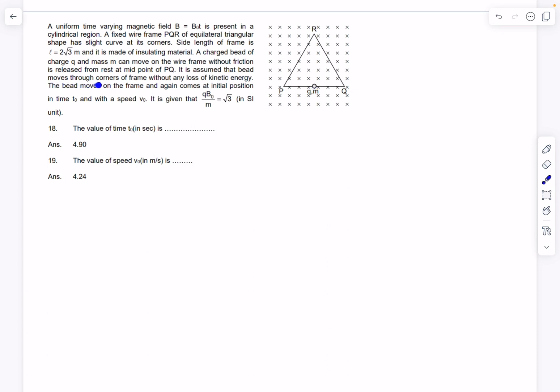It is assumed that the bead moves through corners of the frame without any loss of kinetic energy. The bead moves on the frame and again comes to initial position in time T0 with a speed of V0. So we have to calculate the time in which it returns back to the original point and we need to find the speed with which it returns. So try out this problem guys and then check out the solution.